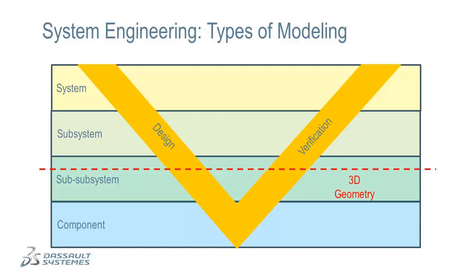At levels where 3D geometry isn't required, lumped system models are used. These kinds of models include design information like masses, lengths, compliances, and so on, but they don't require detailed 3D representations. These lumped system models are the kinds of models that Daimla is designed to work with. As we progress through the system engineering process, Daimla's impact is felt throughout the system engineering and model development process.